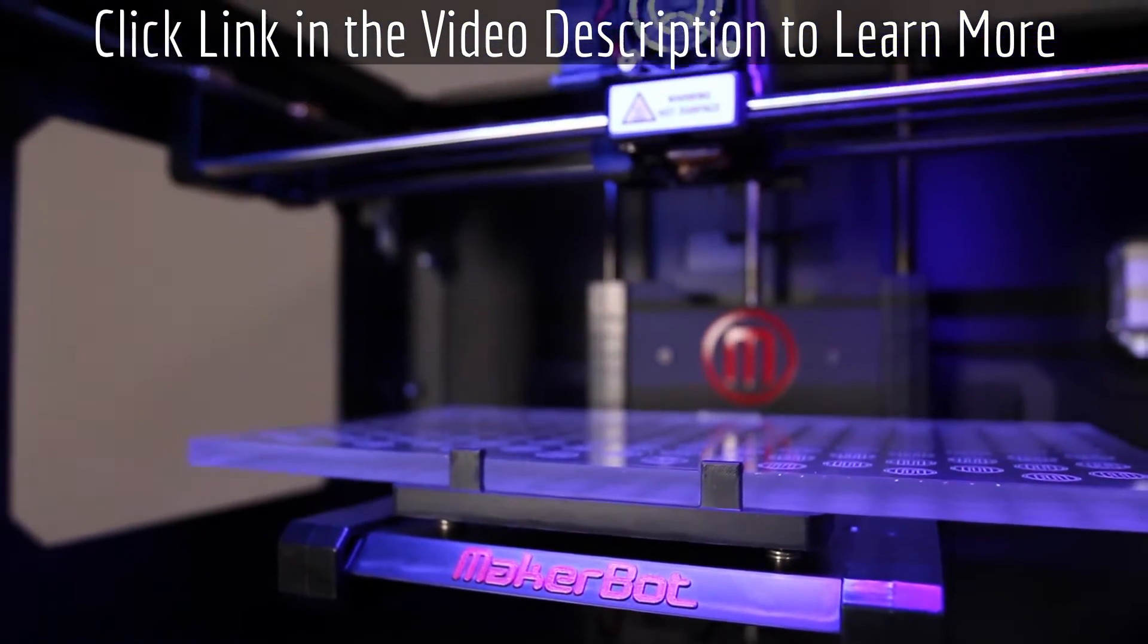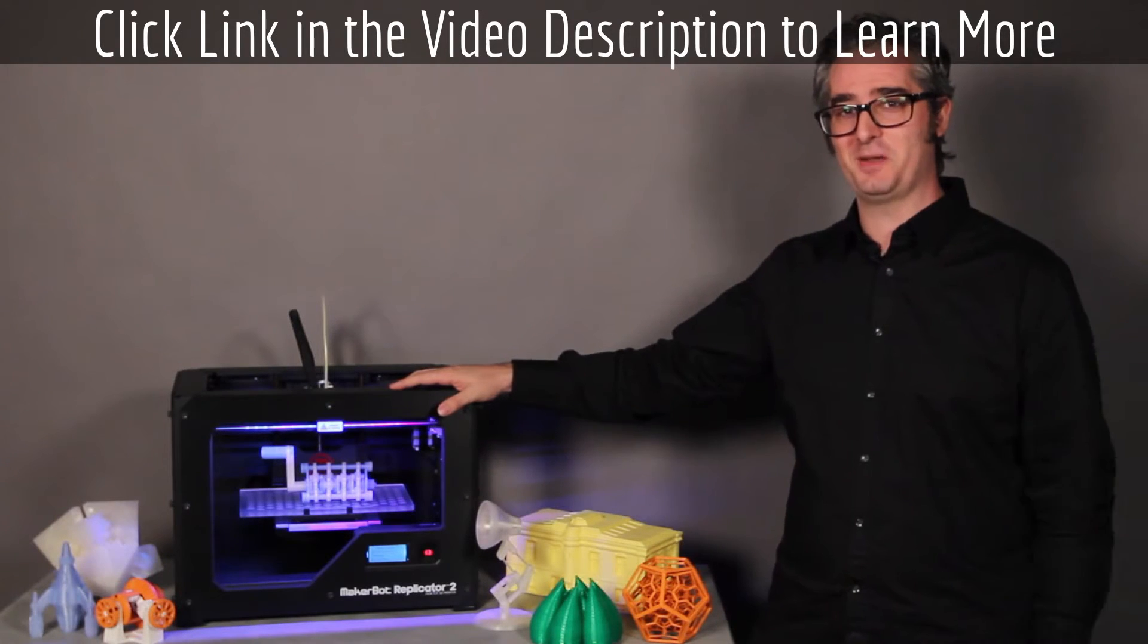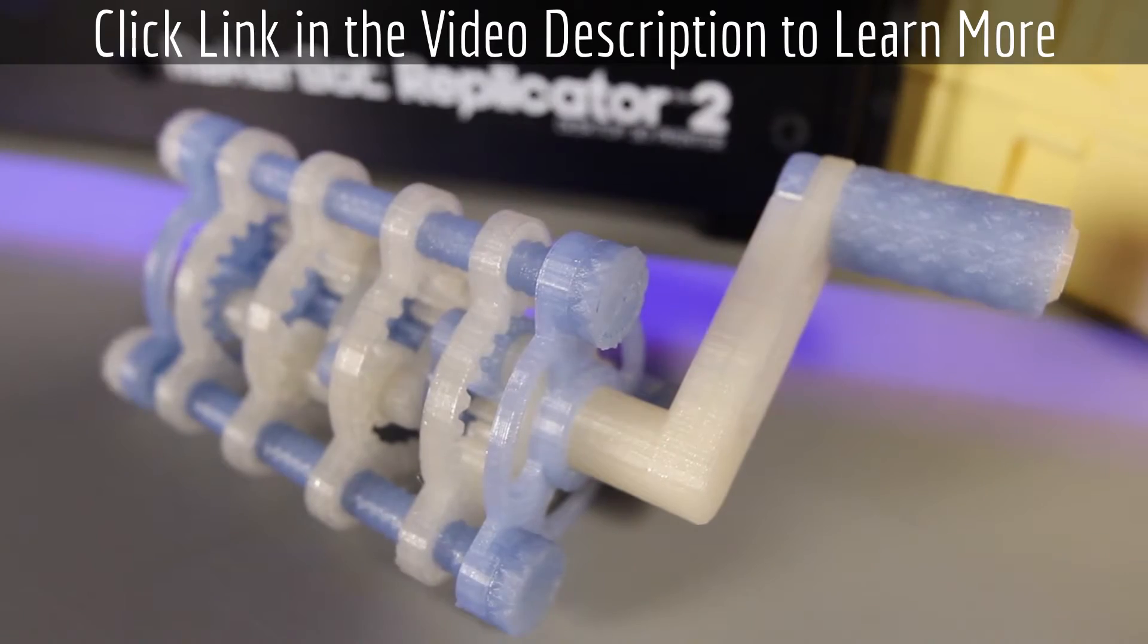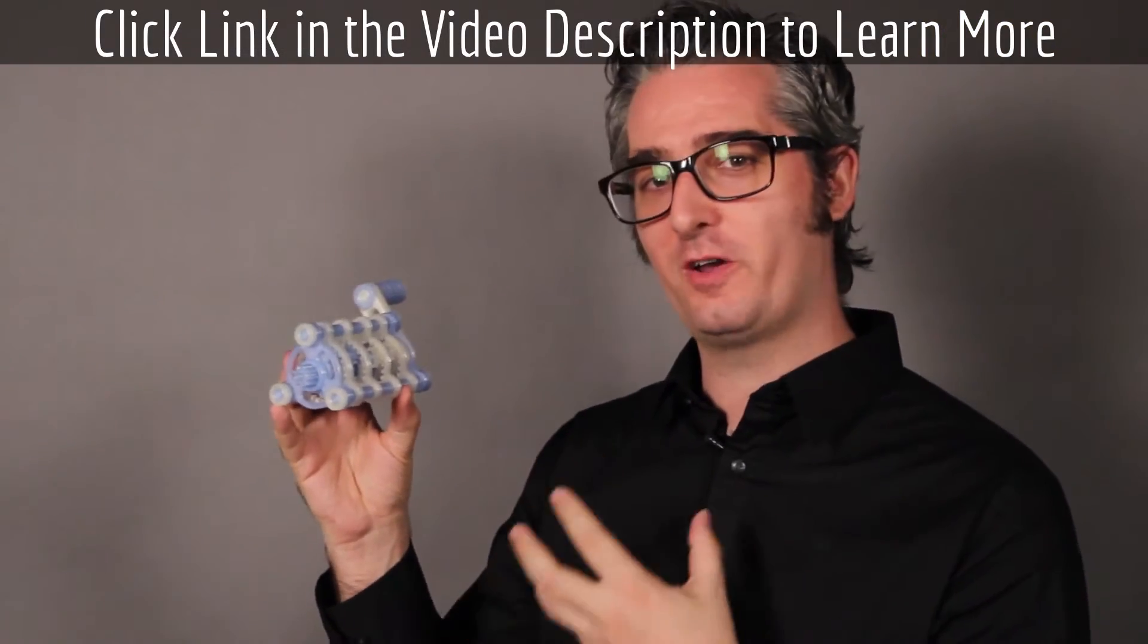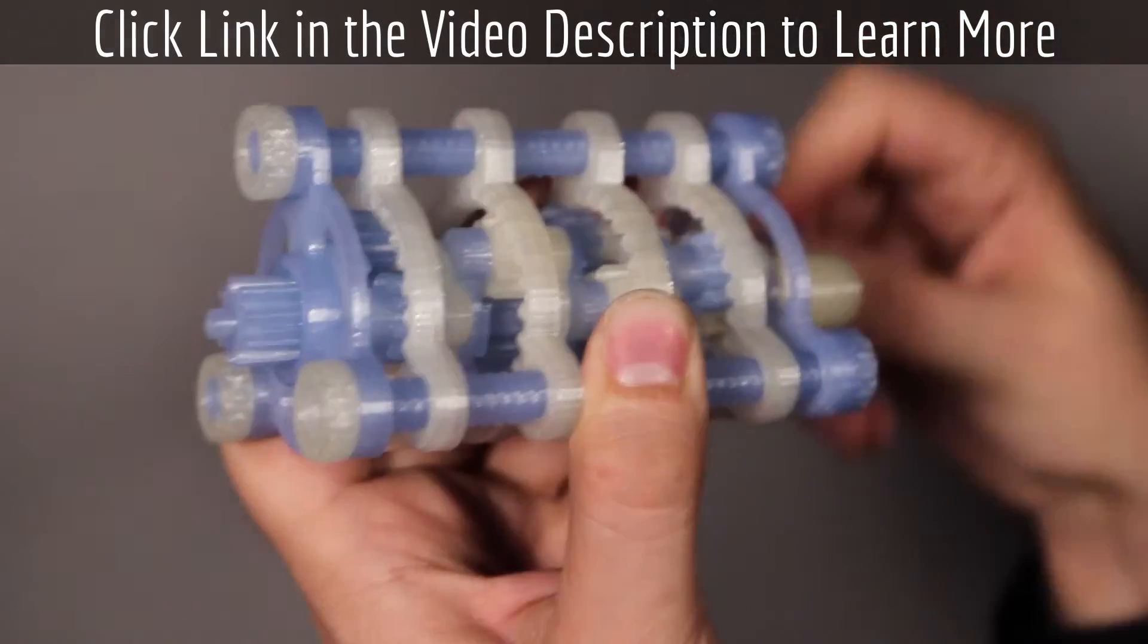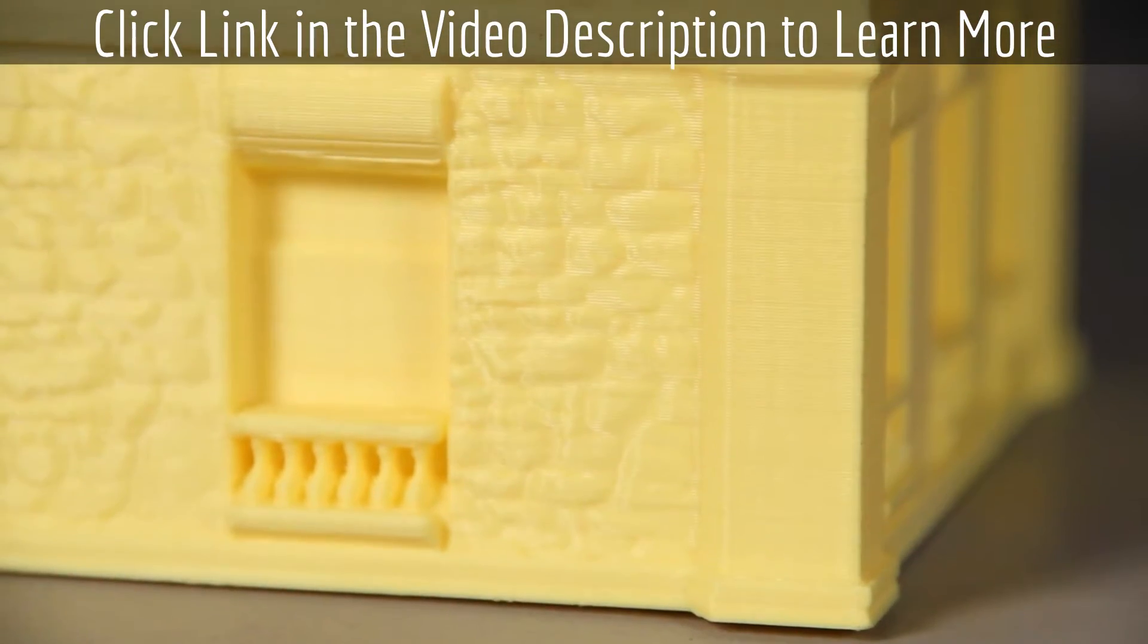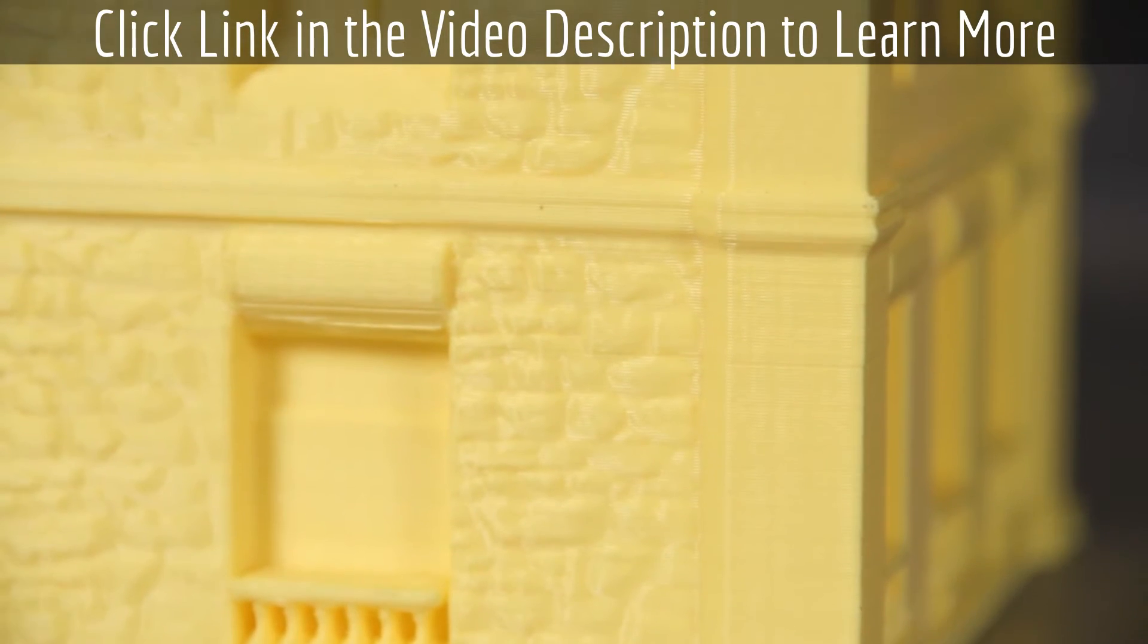With this machine, we've set the standard in desktop 3D printing. The MakerBot Replicator 2 is readily capable of achieving 100 micron layer resolution. That means that the height of each layer of material is 2.5 times finer than the layer height of a previous MakerBot.